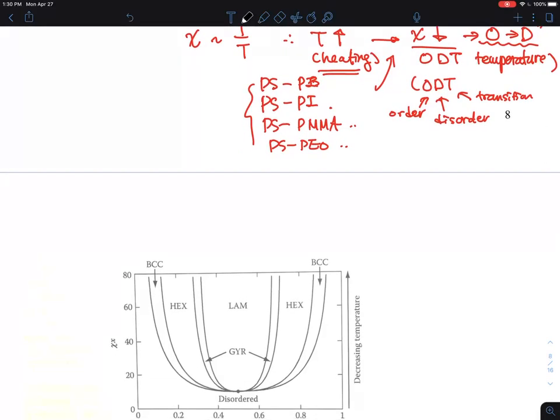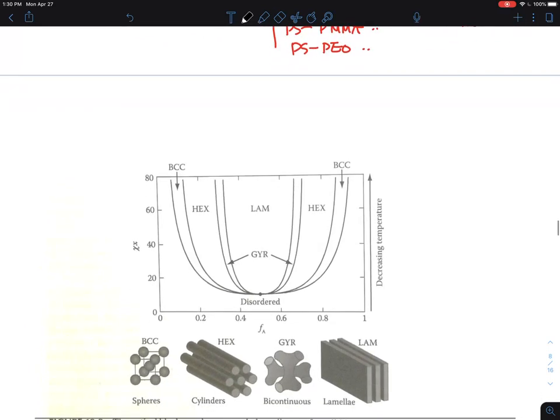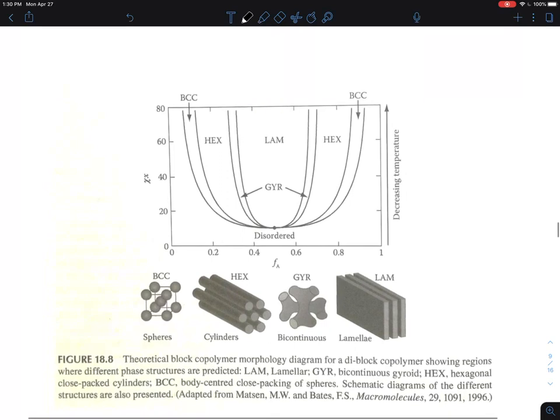This section is about block copolymer phase behavior, which can be well represented by a phase diagram. This is a textbook phase diagram using slightly different notation, so I'm going to delete this and change it to chi N.